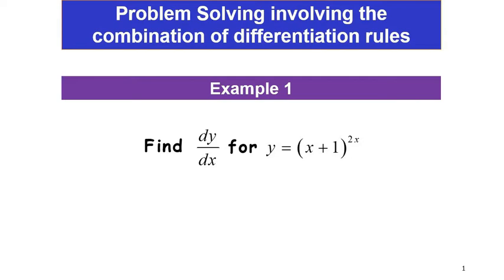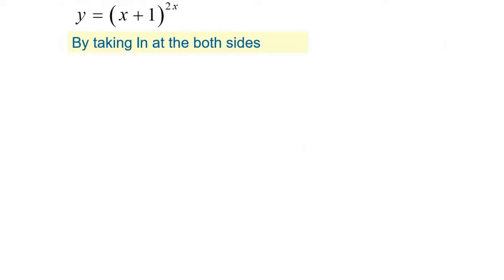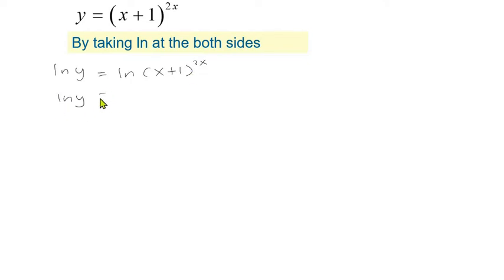To solve this question, first we are going to take ln of both sides. So we have ln y equals ln (x + 1) to the power of 2x. And then we can bring the power down as the coefficient, so we have 2x ln(x + 1).